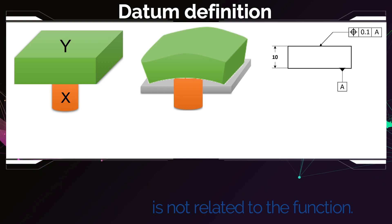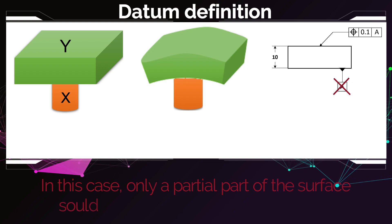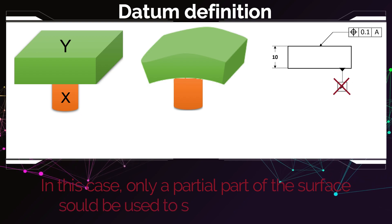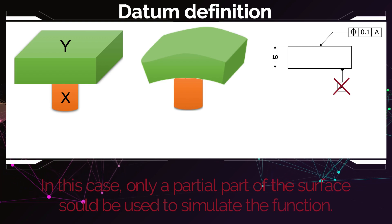So in this case it was not correct to choose datum A just like that. But using GD&T we can actually specify this partial part of the surface to be datum A. We don't have to use the whole surface as A - we can simulate the function exactly as it is.